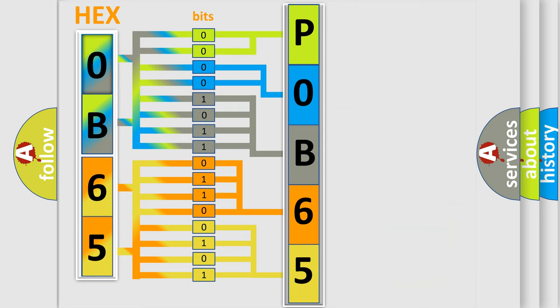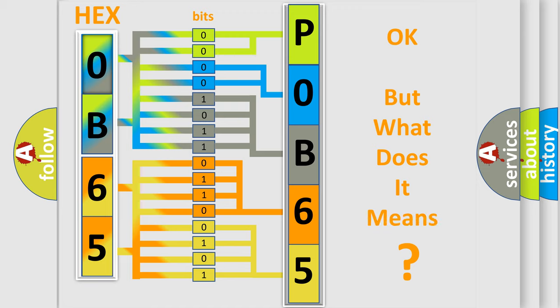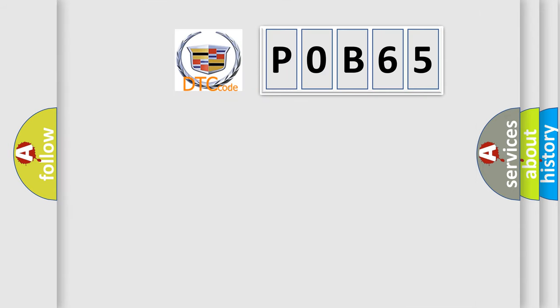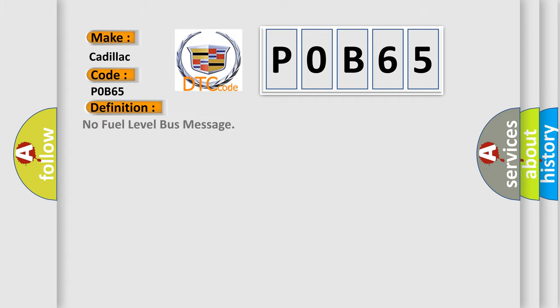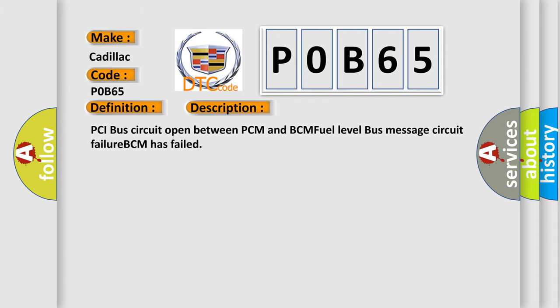We now know in what way the diagnostic tool translates the received information into a more comprehensible format. The number itself does not make sense to us if we cannot assign information about what it actually expresses. So, what does the diagnostic trouble code P0B65 interpret specifically for Cadillac? The basic definition is: No fuel level bus message. This is a short description: PCI bus circuit open between PCM and BCM, fuel level bus message circuit failure, BCM has failed.